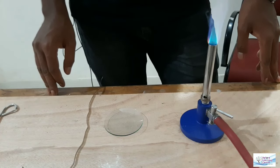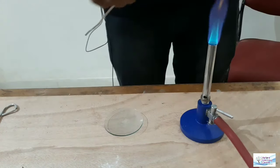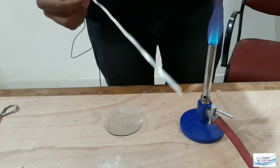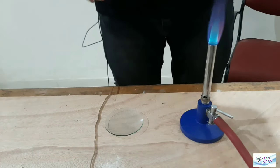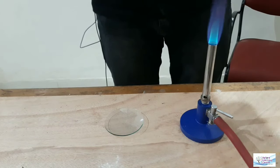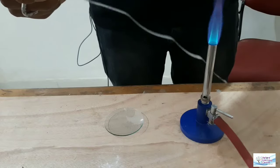We are performing activity 1.1. The apparatus required is a magnesium strip or magnesium ribbon, which is magnesium metal, a watch glass, and a burner. What we need to do for this activity is burn this magnesium ribbon on a flame and observe what happens.